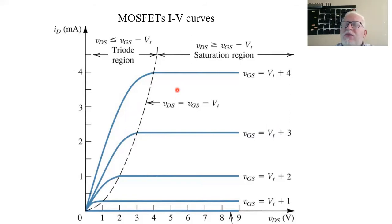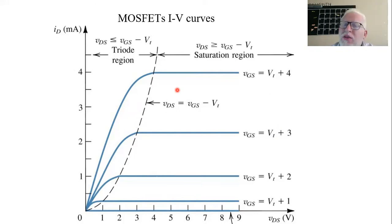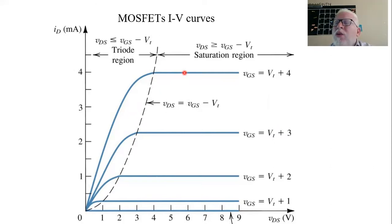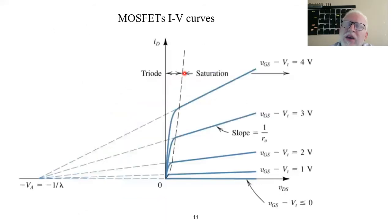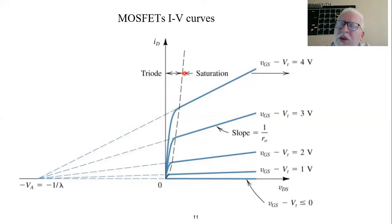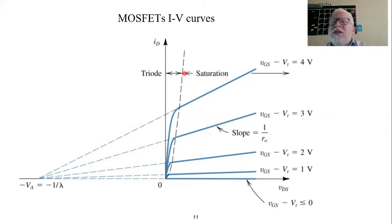At saturation, in the ideal case, the resistance seen by the current flowing from source to drain is equal to infinity — that is why you have a horizontal line, which indicates infinite resistance, since resistance equals one over the slope. Realistically, however, a real MOSFET has a finite output resistance, also equal to one over the slope. This is the difference between the realistic IV curve and the ideal IV curve.